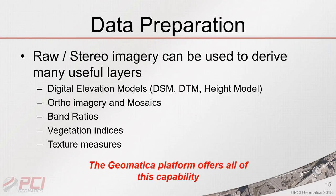Raw stereo imagery can be used to derive many useful layers. The Digital Surface Model represents everything above the surface including the ground; filtering terrain off produces a terrain model, and taking the difference gives a height model. Ortho imagery and mosaics are critical for segmentation and channel information. We can also perform band ratios, calculate vegetation indices, and calculate texture measures — all of which will be shown in the following slides.